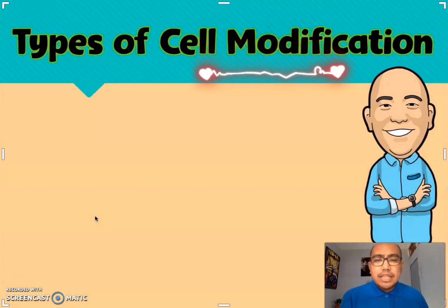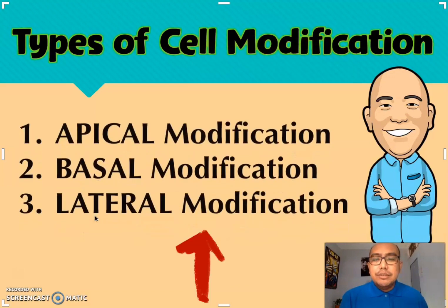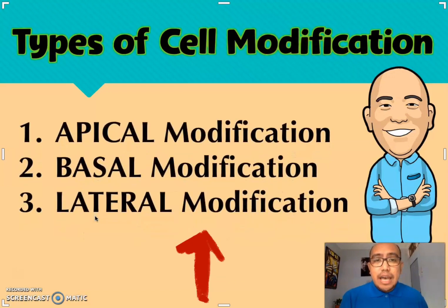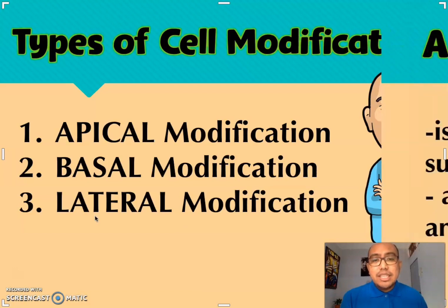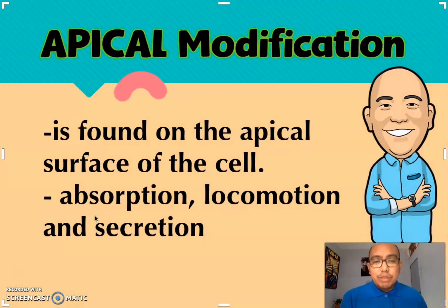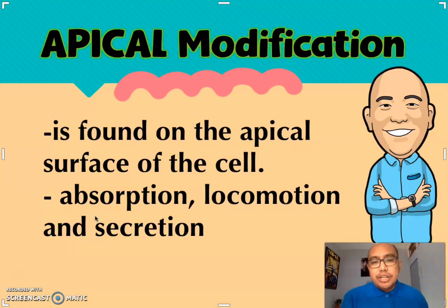Basically, there are three types of cell modification. The first one is the apical, the second one is the basal, and the third one is the lateral modification. Let us discuss them one by one, starting with the apical modification. It is found on the apex or the apical surface of the cell.